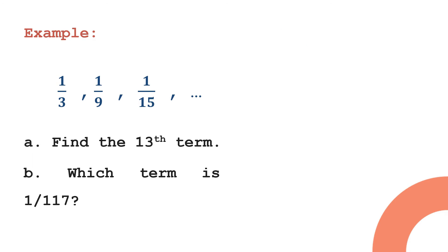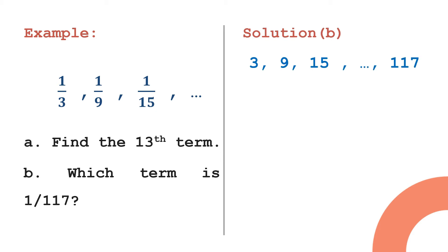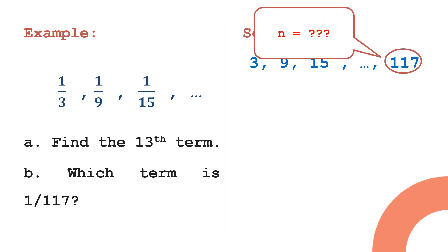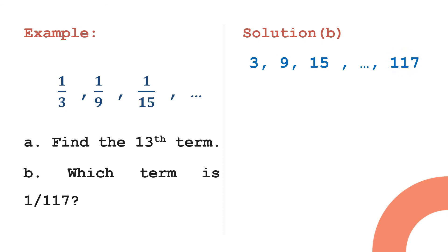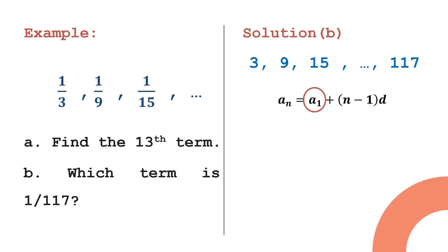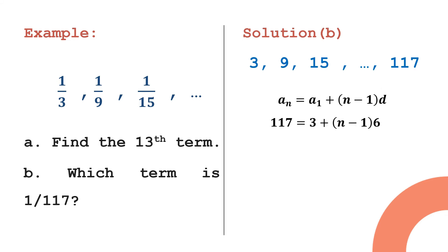Now for letter B: which term is 1/117? We follow the same process. Taking the reciprocal of the harmonic sequence gives us 3, 9, 15, up to 117. We treat 117 as the last term aₙ, and we are looking for the value of n. Given values: aₙ = 117, a₁ = 3, d = 6, and n is unknown. Using the arithmetic formula: 117 = 3 + (n − 1) × 6.